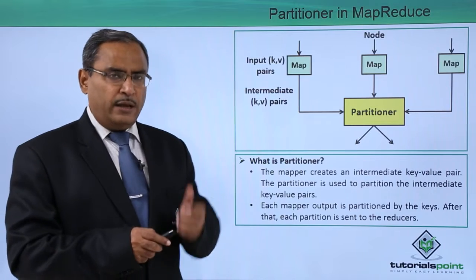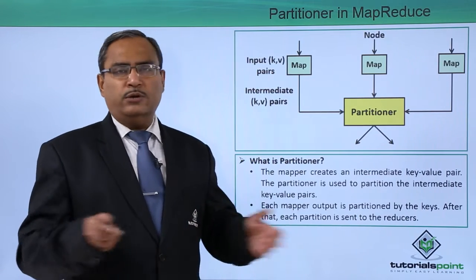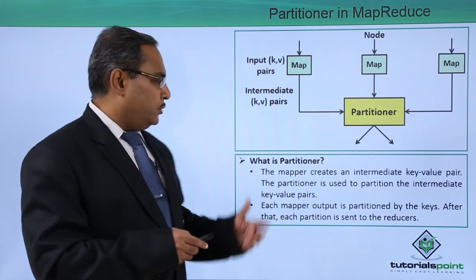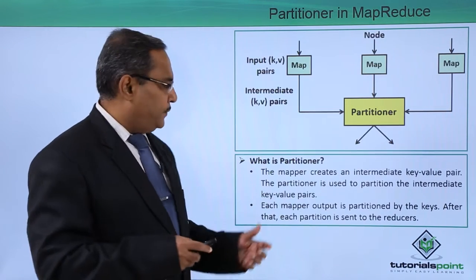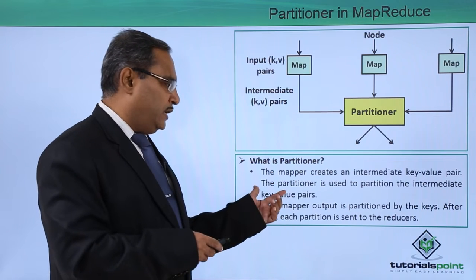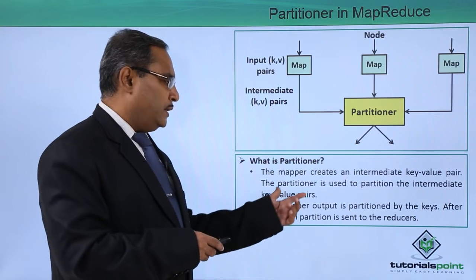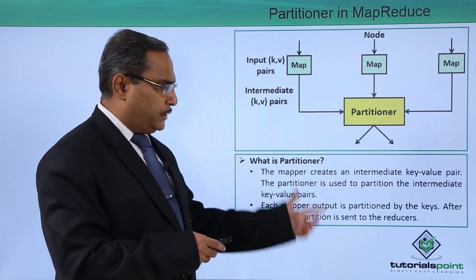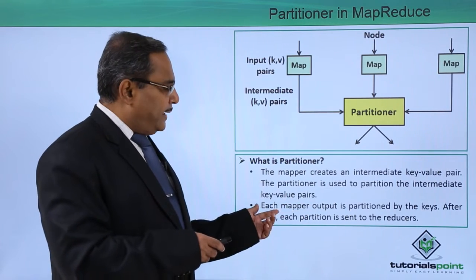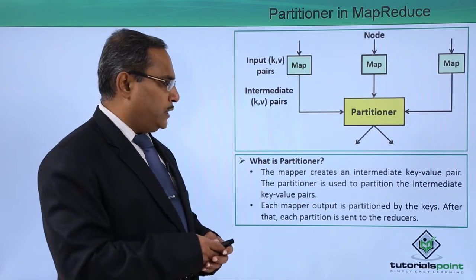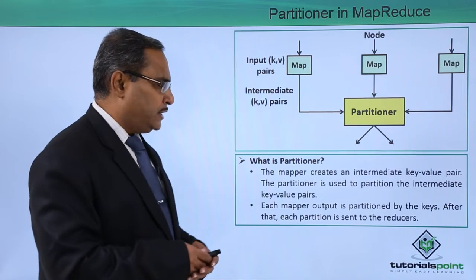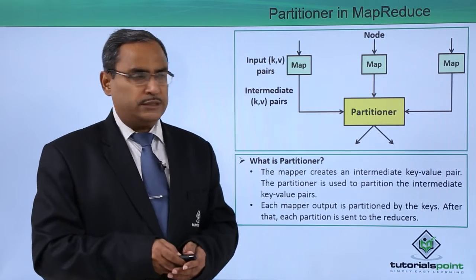Whenever we are having only one reducer, then we do not require any partitioner. The mapper creates an intermediate key-value pair. The partitioner is used to partition the intermediate key-value pairs. Each mapper output is partitioned by the keys, and after that each partition is sent to the reducers.